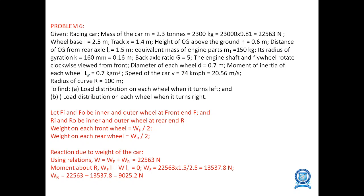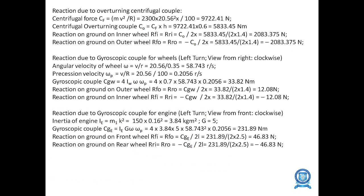This is the gyroscopic problem for a racing car. Similarly, the values of I, M, X, CG, K, IR, and back axle ratio are given. Find the load distribution on each wheel when it turns left and when it turns right. Weight on each wheel: WF/2 and WR/2; total weight WF + WR = 9025.2 N. Reaction due to overturning centrifugal couple = −2083.375. Reaction due to gyroscopic couple when turning left = −12.08 N; when turning right (clockwise) = −46.83 N.